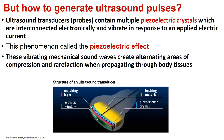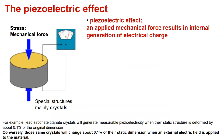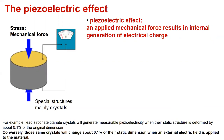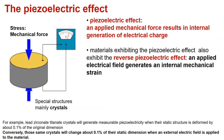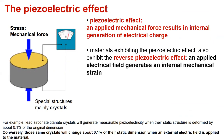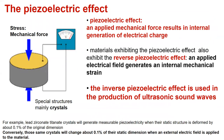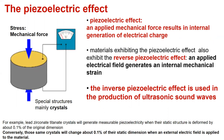These vibrating mechanical sound waves create alternating areas of compression and rarefaction when propagating through the body tissues. If we apply a mechanical force or stress to a special structure — mainly crystals — we can observe this piezoelectric effect. The applied mechanical force results in internal generation of an electrical charge. But materials exhibiting the piezoelectric effect also exhibit the reverse piezoelectric effect: the applied electrical field generates an internal mechanical strain as well. And this reverse piezoelectric effect is used in the production of ultrasound waves.